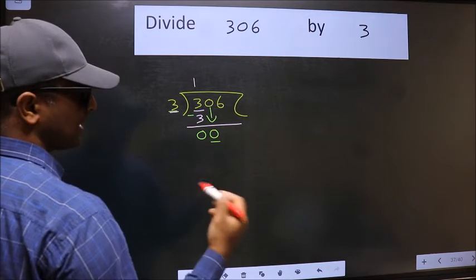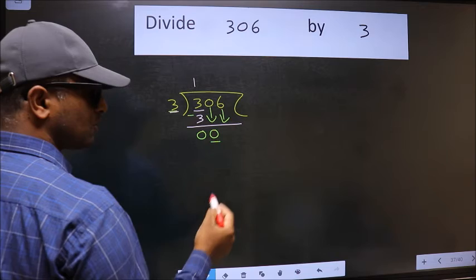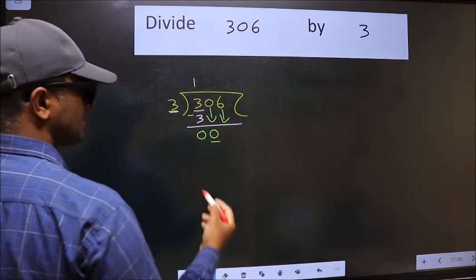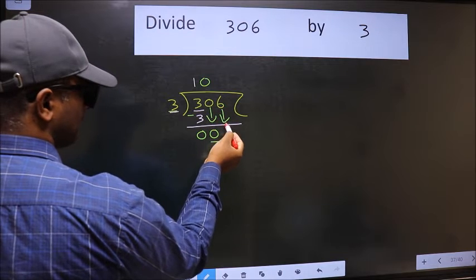So we should bring down the second number. And the rule to bring down the second number is we should put 0 here. Then only we can bring down this number.